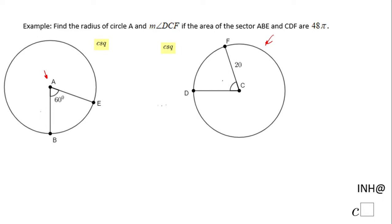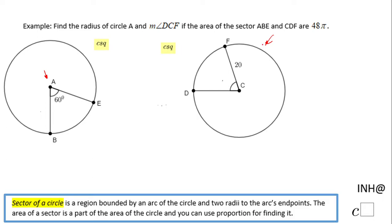The sectors are these regions bounded by an arc of the circle and two radii. So in fact, this is 48π and also this one is 48π. So let's go back to the first circle. In this one, we need to find how much this radius is. If you notice, this sector is for a central angle that is 60 degrees.